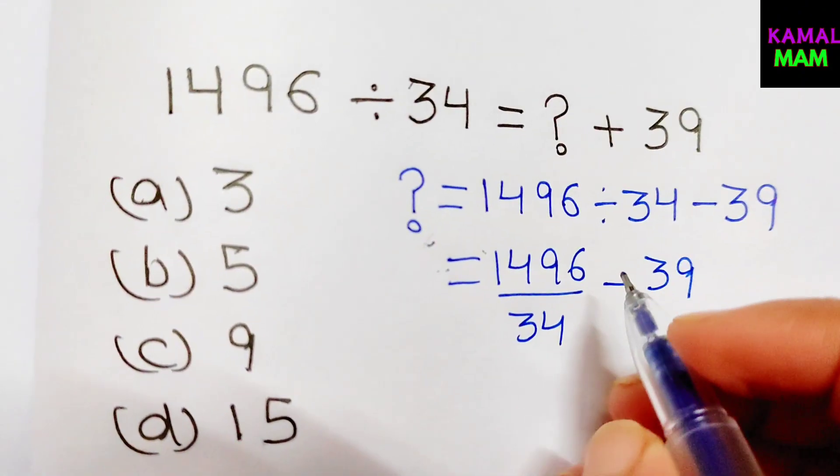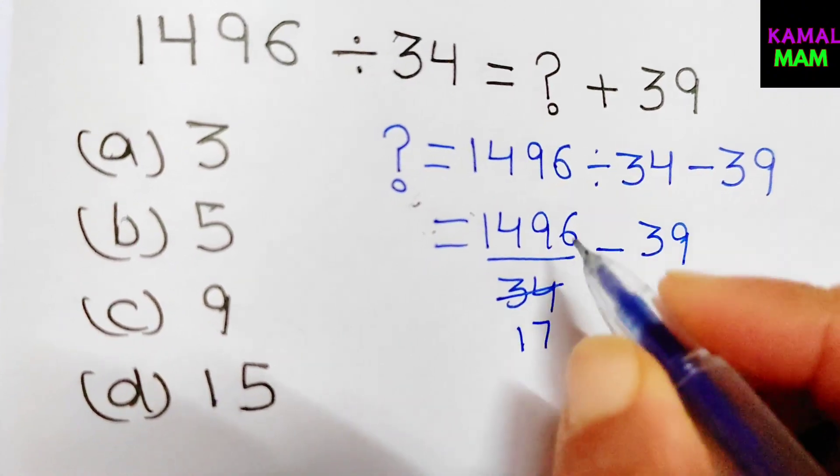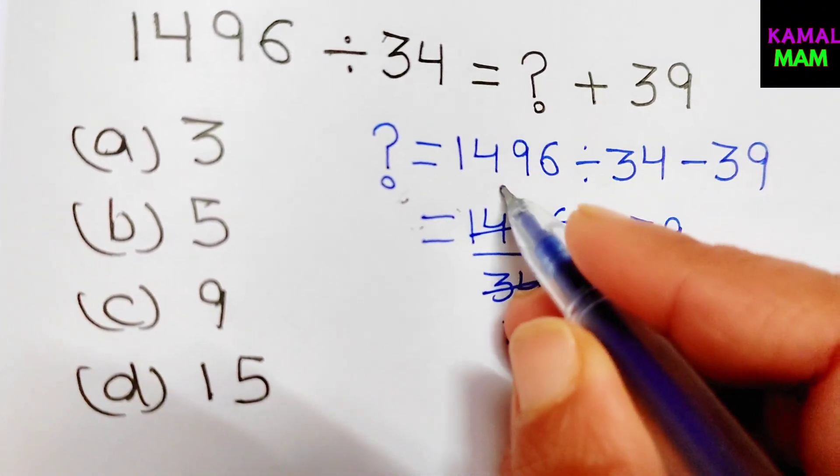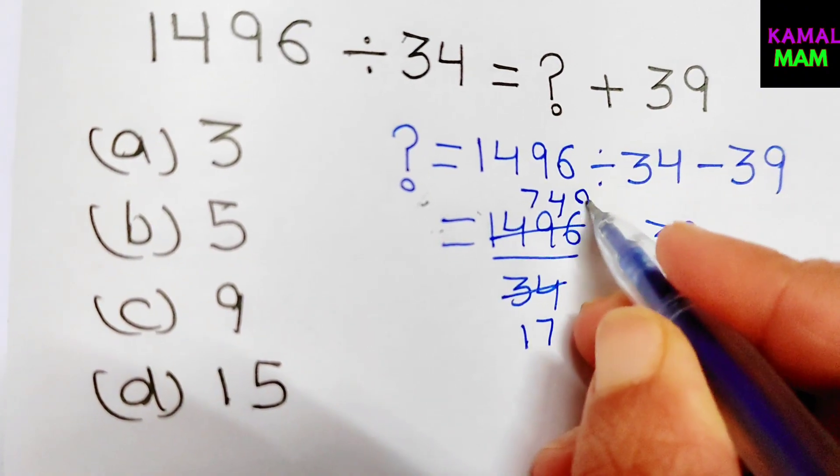So it goes on table of 2 first. It's 2 1s are 2, 2 7s are 14 and 2 7s are 14, 2 4s are 8 and 2 8s are 16.